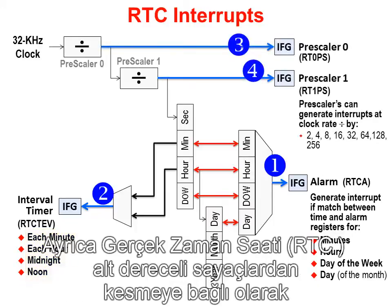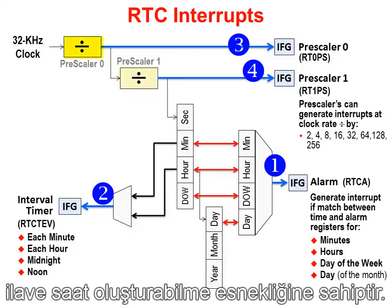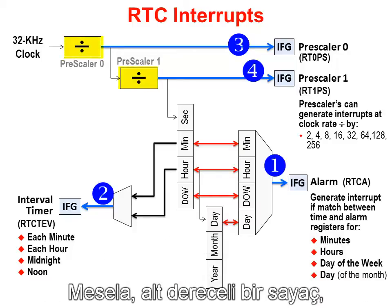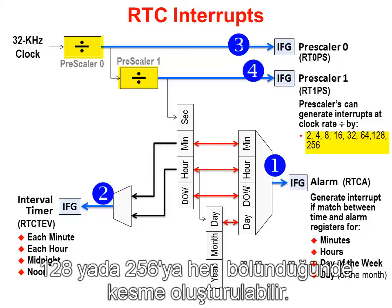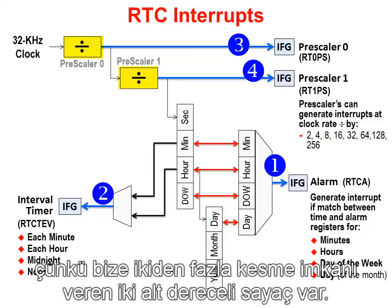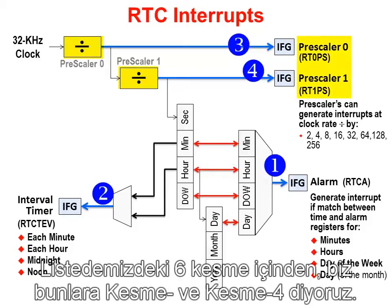The RTC also has the flexibility to generate additional time-based interrupts from the pre-scale counters. For example, whenever a pre-scale counter is divided by 2, 4, 8, 16, 32, 128, or 256, an interrupt can be generated. Because we have two pre-scale counters, that gives us two more interrupts — interrupts 3 and 4 in our list of six.